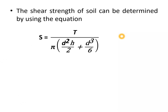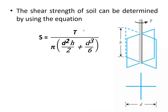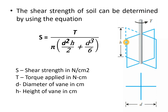Using the maximum torque, the shear strength of the soil can be determined by the equation: s equals T divided by [π times (D² × H/2 + D³/6)], where T is the torque applied, D is the diameter of the blade, and H is the height of the blade.